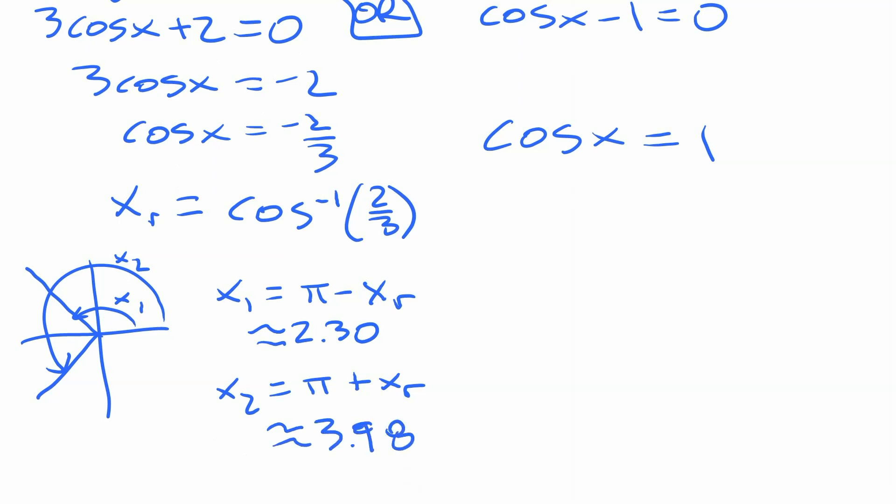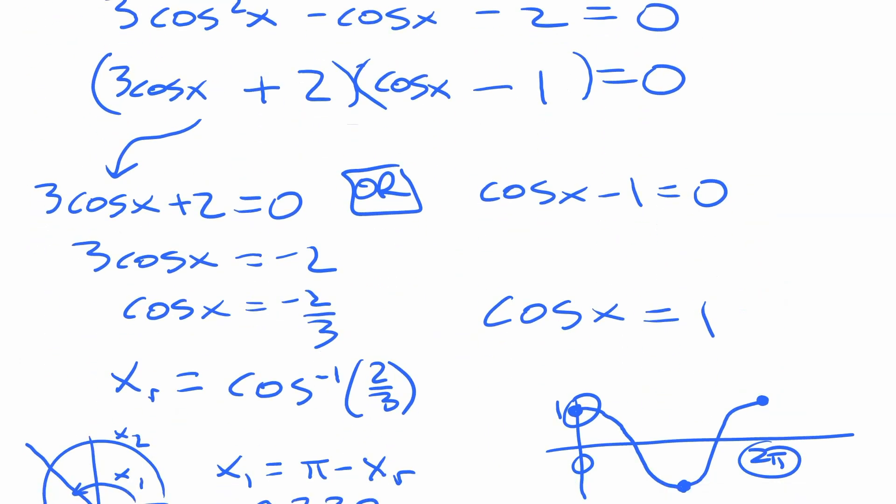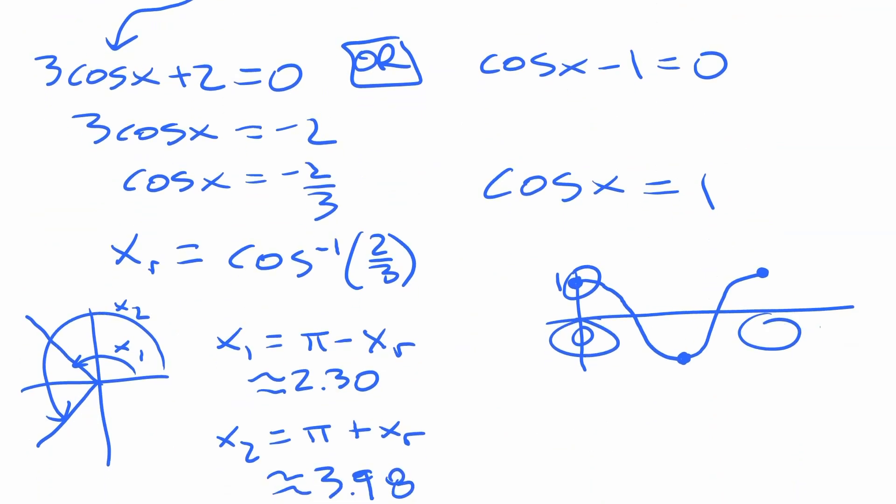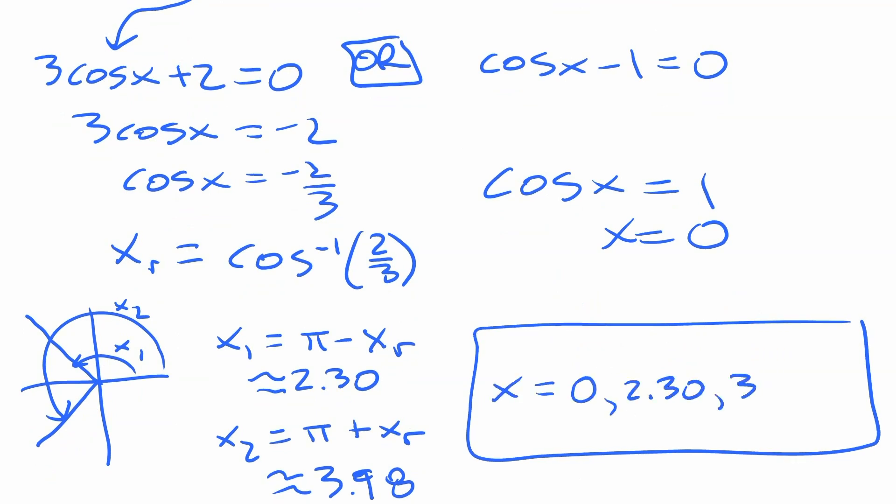Now the other one, cos x equals 1. Actually, we don't need to resort to the calculator for that because we can just use the fact that this is an exact value we know, either from thinking about the graph or from the unit circle. I tend to like to think about the graph of cosine. Cosine starts at one, it goes down to negative one at π and back up to one at 2π. So it's one at zero and at 2π. The thing is though, if you look carefully at this, it says less than 2π. So the only value we're going to include there is zero. So our solution to this is x equals zero. So if we're going to put a list of solutions all together here, we're going to say that x is roughly equal to zero, 2.30, 3.98.